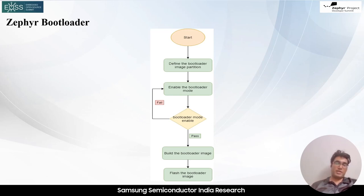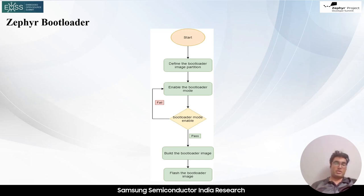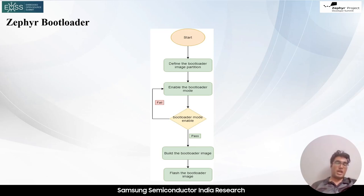The bootloader then reads the main application image from the selected boot source. It typically verifies the integrity and authenticity of the image using cryptographic signatures or checksums to ensure the application has not been tampered with. Optional authentication is also possible. If the main application image is signed with a digital signature, the bootloader may perform additional authentication steps, verifying the signature against a trusted key or certificate. Once the bootloader has successfully loaded and authenticated the main application, it transfers control to the application entry point, and the main application begins execution.